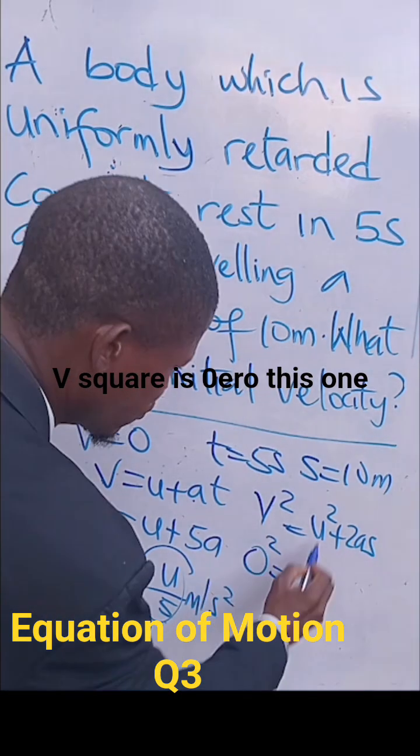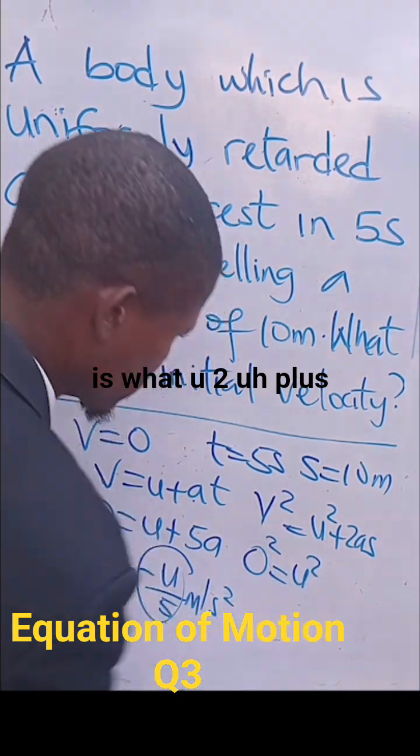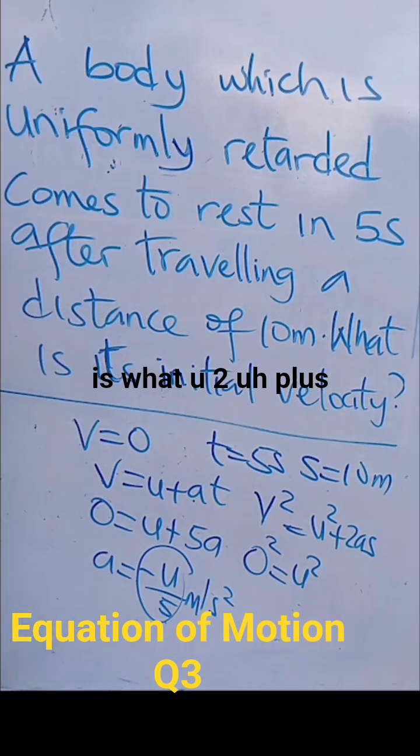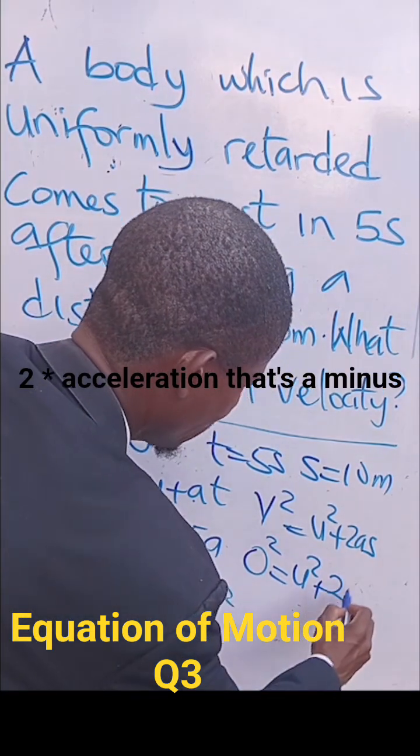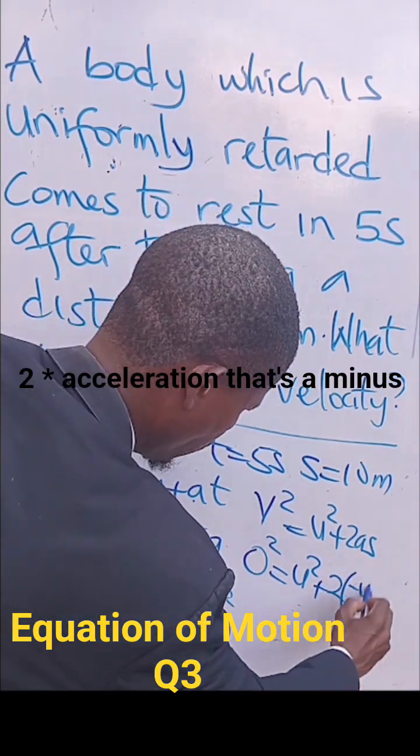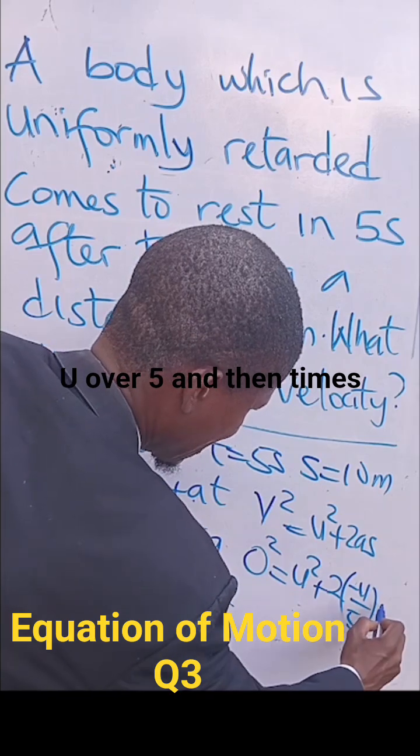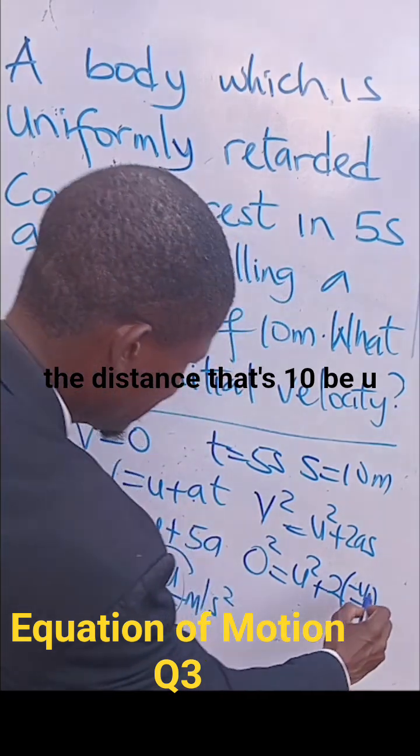V squared is 0. This one is what? U squared plus 2 times acceleration. That's minus U over 5. And then times the distance. That's 10.